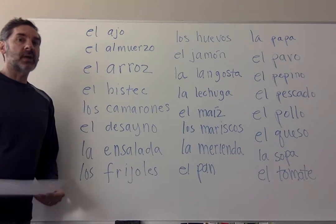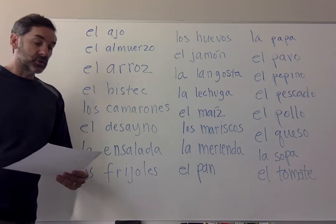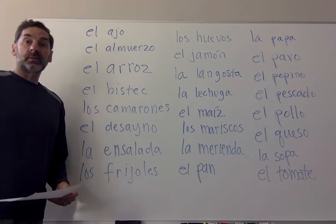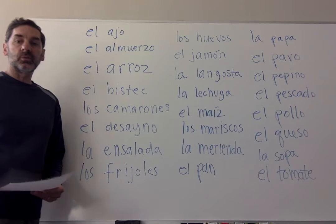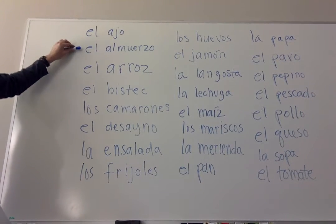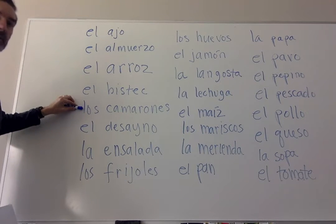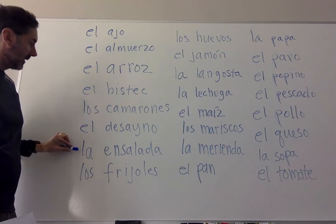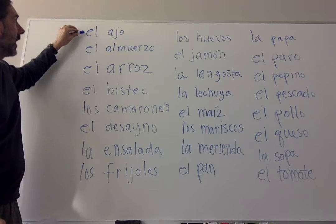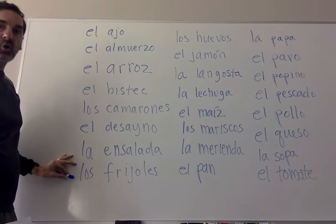These come from your words in lesson 4.2 in Ritmos, on page 172 from your textbook. I'm going to run down the list of words here for practicing pronunciation: el ajo, el almuerzo, el arroz, el bistec, los camarones, el desayuno, la ensalada, los frijoles.